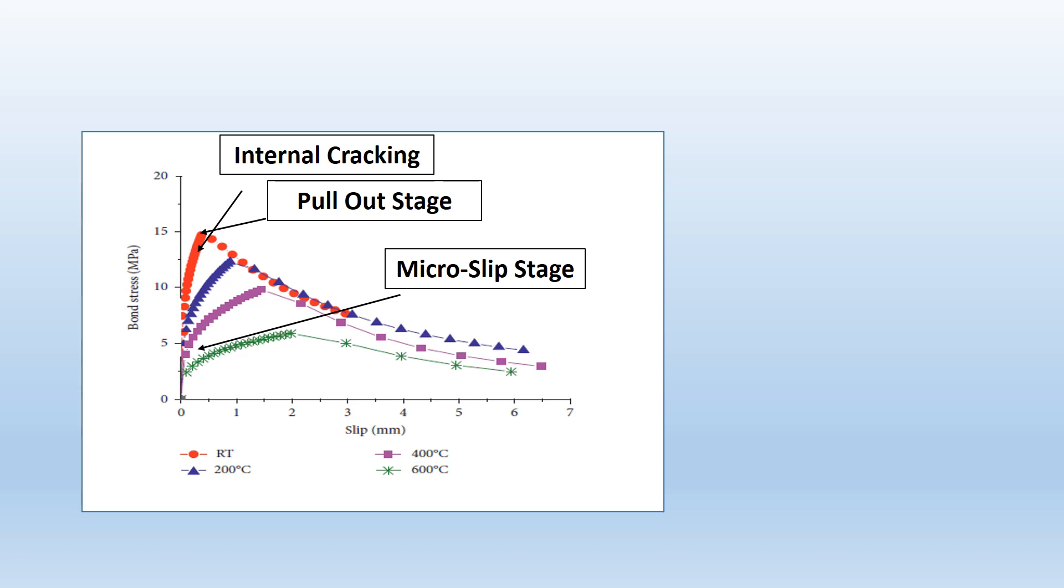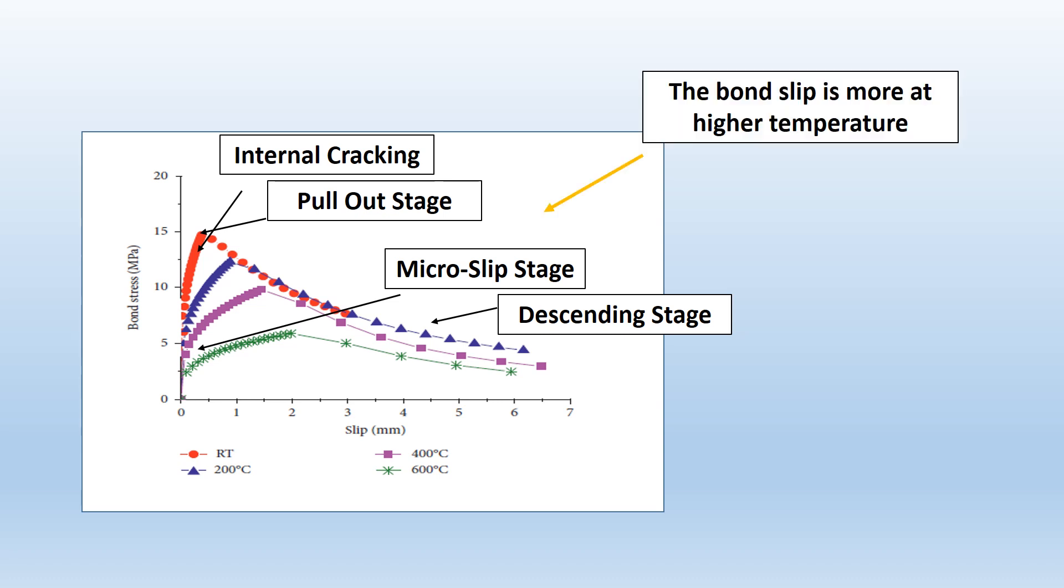Finally, there is a descending stage when the bond slip increases and the interlocking is lost. The bond slip naturally increases as interlocking, friction and adhesion is all lost at higher temperatures in concrete. There is another phenomenon connected to the higher temperatures.